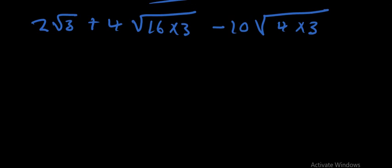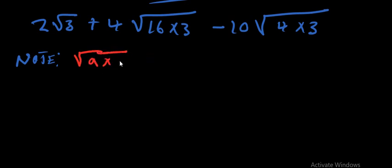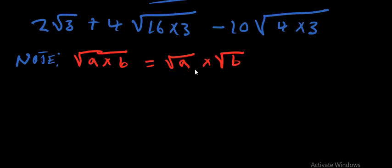The rule we apply is: √(a × b) = √a × √b. So the numbers inside the square root can be separated using this rule.